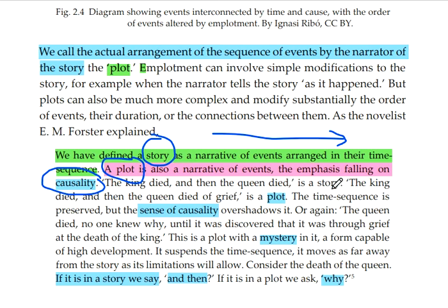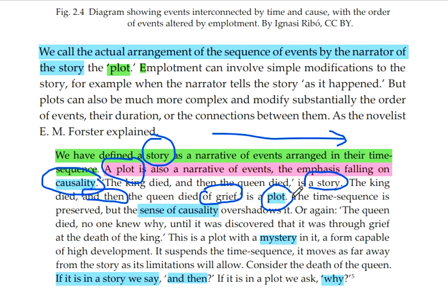For example: 'The king died and then the queen died' — this is a story without causal connectors. But 'The king died and then the queen died of grief' — now we have a causal connection showing why the queen died. In this case, the time sequence is preserved but now the sense of causality is added.